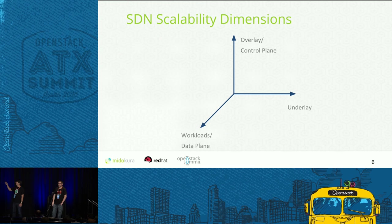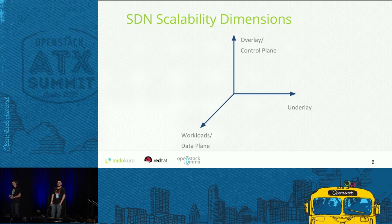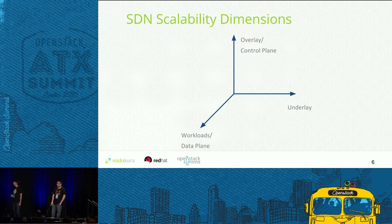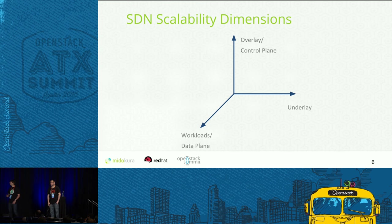For the Y and Z axes, we will use Rally, which allows us to scale the control plane operations and at the same time add workloads. For scaling the underlay, we will use our tool called MioNet Sandbox, which is a wrapper around Docker.